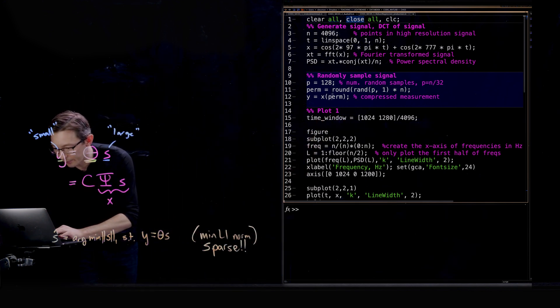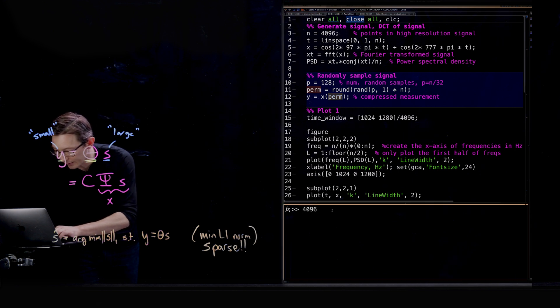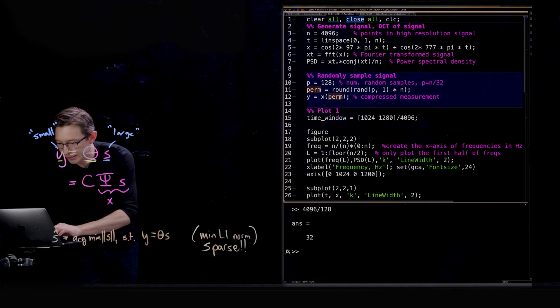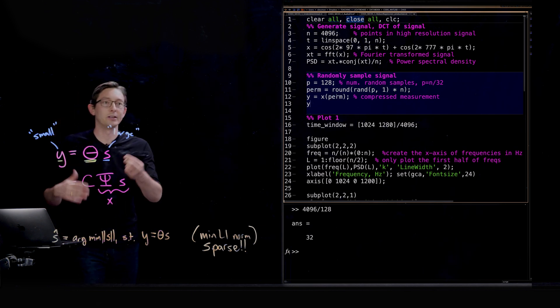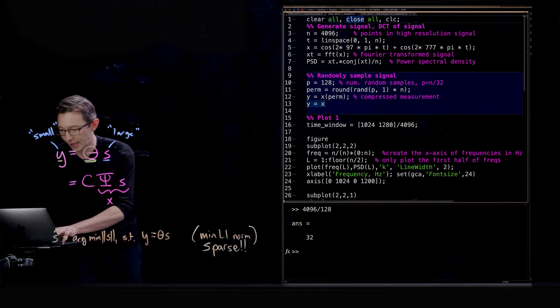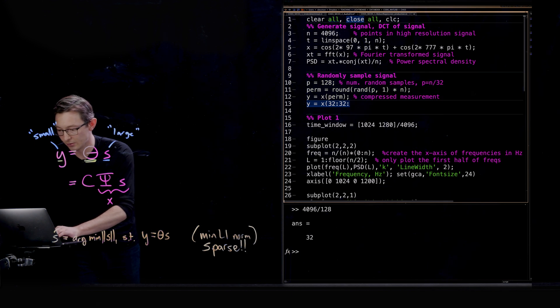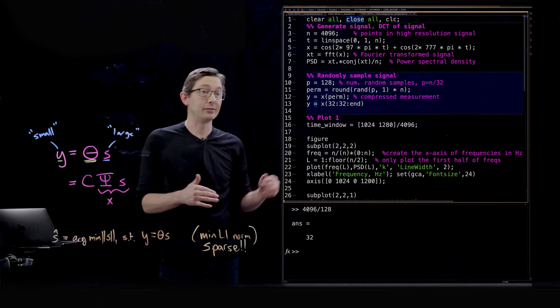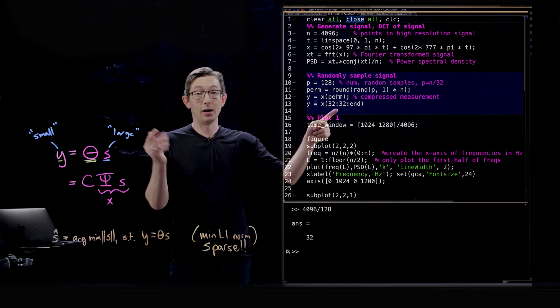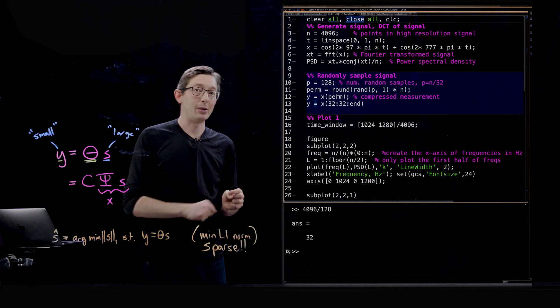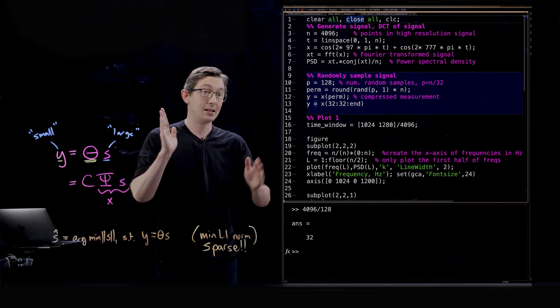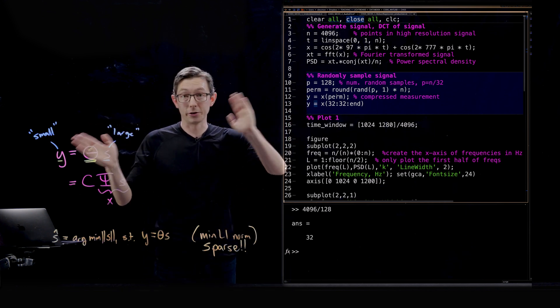Instead what I'm going to do is, it's 4096 divided by 128, it's 32, I'm only going to sample every 32nd entry of X. So Y equals X of 32 colon 32 colon end. So this is going to massively downsample X into 128 measurements in Y but they're not going to be random. They're going to be uniformly spaced.